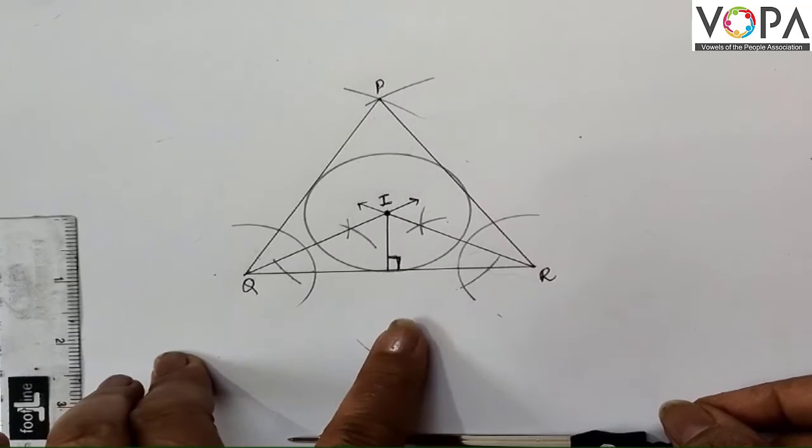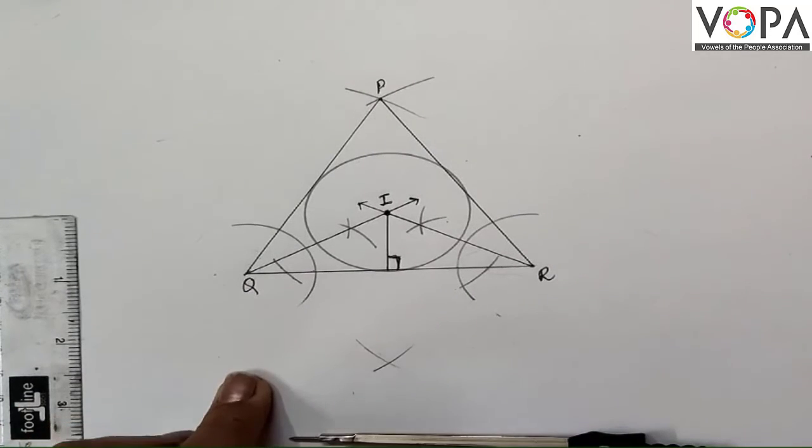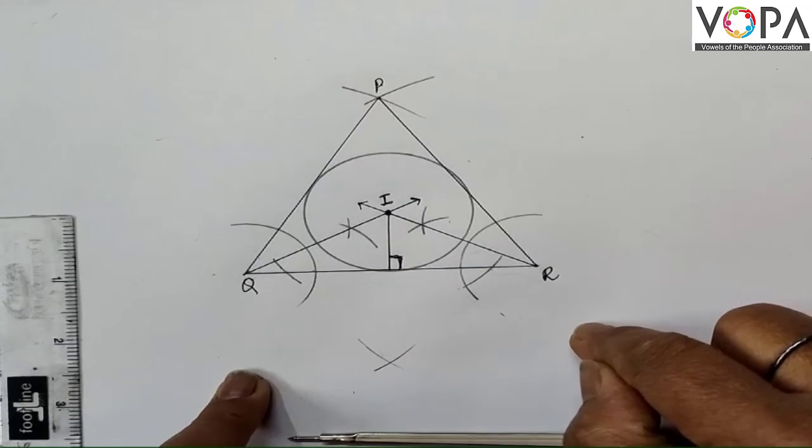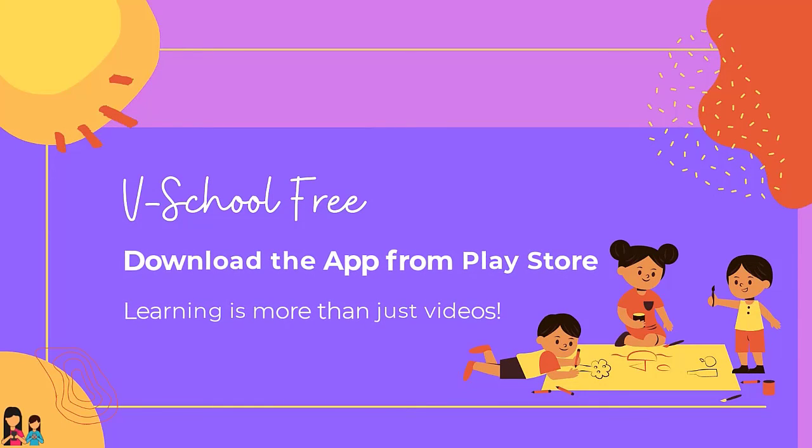Now this is the in-circle we required. Now you can understand how to draw an in-circle. By drawing it many times, you will get the perfection of drawing it.